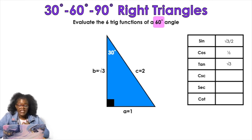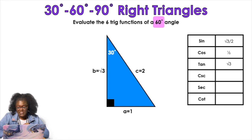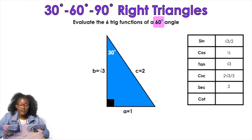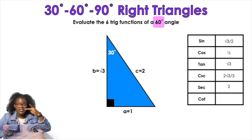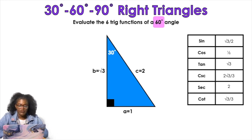Finding cosecant, secant, and cotangent uses reciprocals. Cosecant is the reciprocal of sine: flipping root 3 over 2 gives 2 over root 3, which rationalized is 2 root 3 over 3. Secant is the reciprocal of cosine: flipping 1/2 gives 2 over 1, which is just 2. Cotangent is the reciprocal of tangent: flipping root 3 over 1 gives 1 over root 3, rationalized as root 3 over 3.